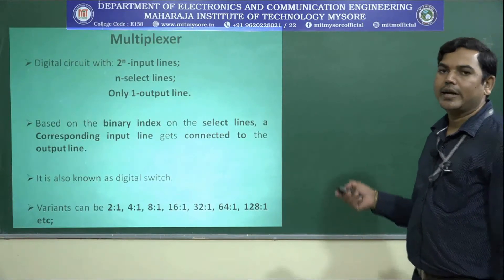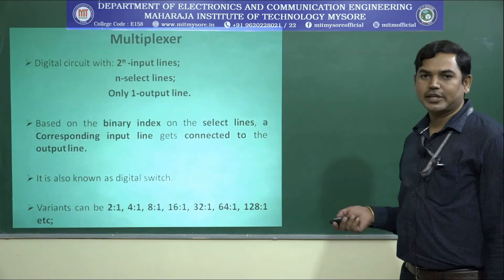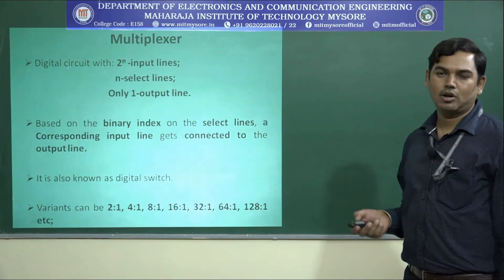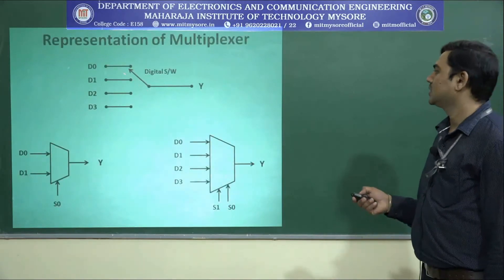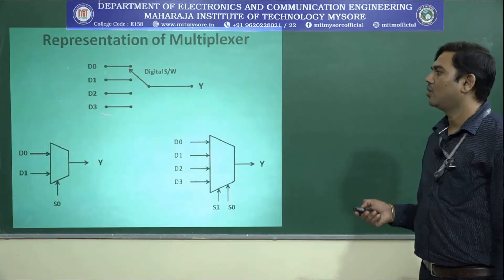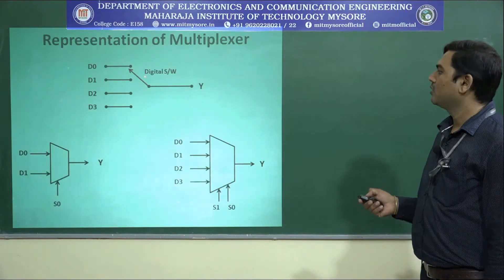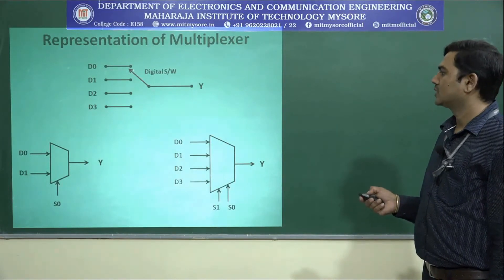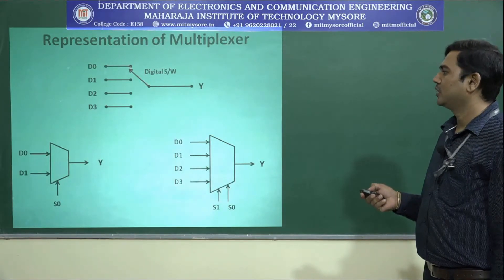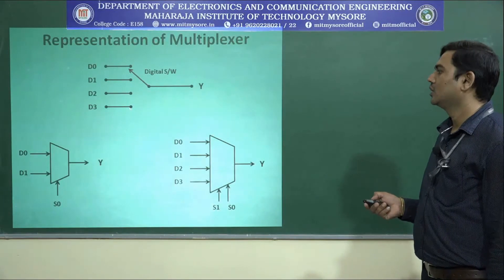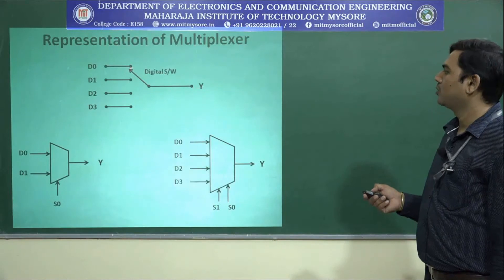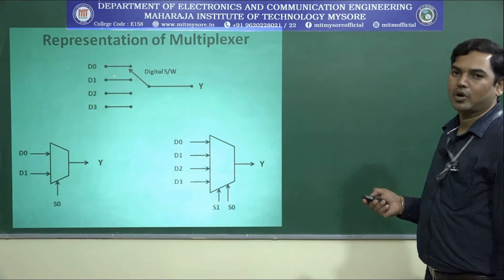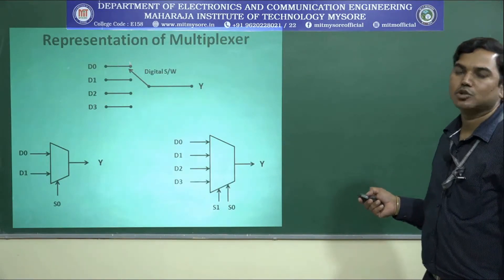Let us try to write the functional table, the logic expression, and a logic circuit for a multiplexer. This is the representation of how a multiplexer works. Whatever index you place at the select line, it will try to switch with D0, D1, D2, or D3 and establish a link between the output and one of the input lines whose index we place on the select lines.